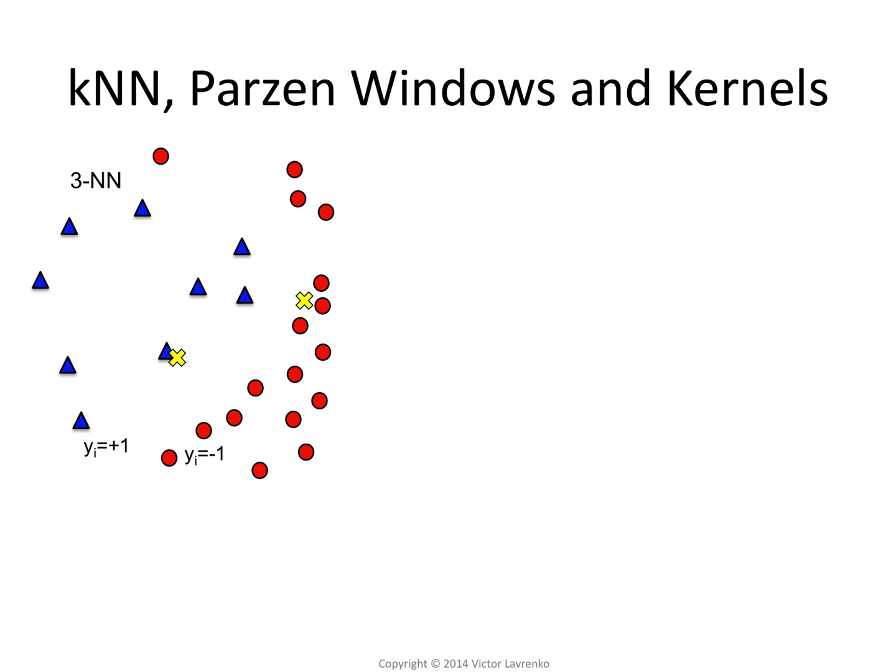We have a data set in two dimensions with two classes, blue and red, and we're looking at two different testing points — the yellow crosses. Suppose we run a three-nearest-neighbor algorithm. For the first testing point, it finds the three nearest neighbors: one blue point and one red point, all inside a little radius r. So the algorithm bases the prediction on this region r, which has exactly three training examples in it.